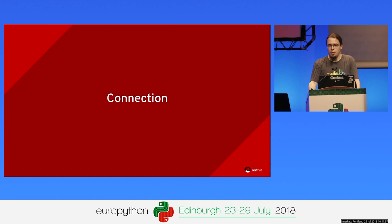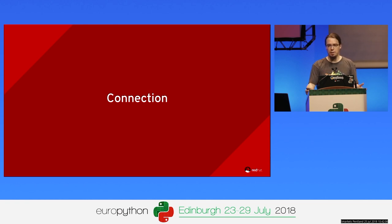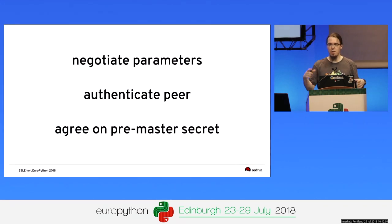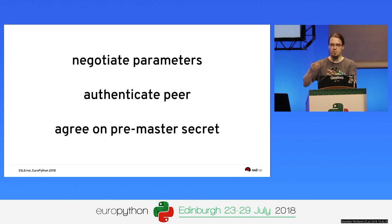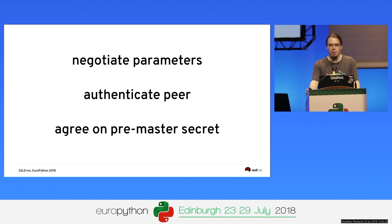First thing we do is connect to the server. During the initial handshake, we do three vital steps: we have to agree on parameters — which protocol version and cipher suite to use. We have to authenticate the server so nobody can do a man-in-the-middle attack, and no attacker can pretend to be your bank or email provider. And we need to agree on something called the pre-master secret — a shared secret used to derive more secrets for encryption and protection on the wire.